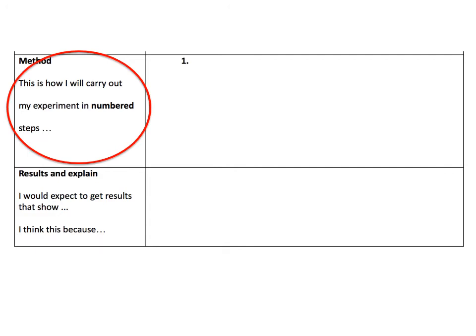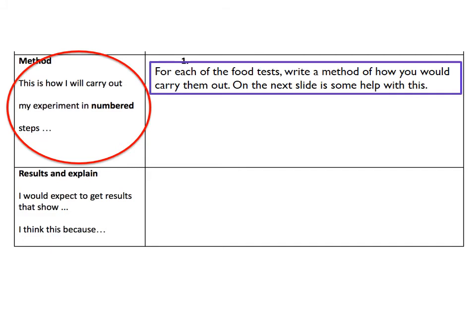The next thing you need to do is write your methods. There are going to be four different methods: one to test the fats, one to test the proteins, one to test the starch, and one to test the sugars. There is information on the next slide to help you with this, and you can always go back to the video as well.